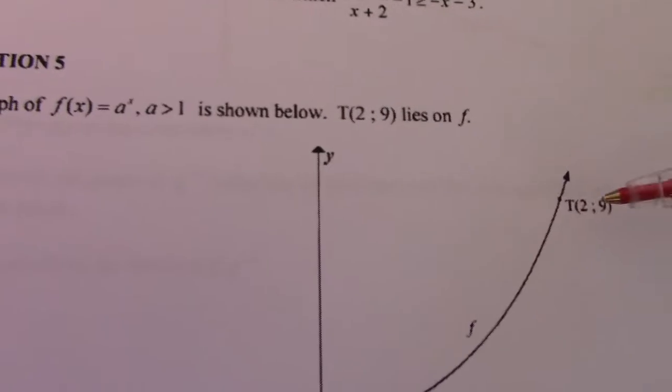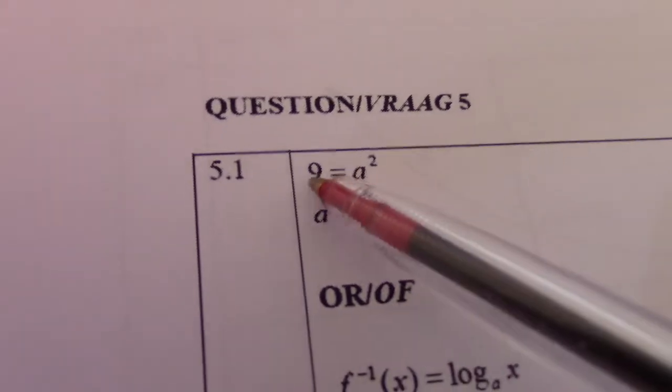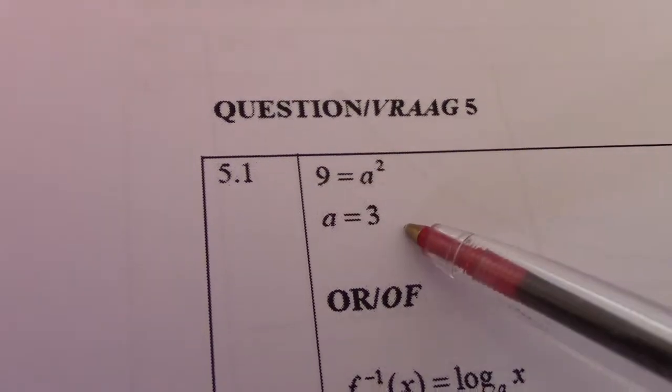So all we're testing is can you substitute this into the equation given. Right, so according to that, when x is 2, y is 9. So given to us, 9 equals a squared. We should know square root of 9 is 3.